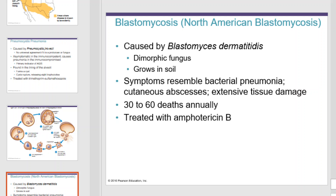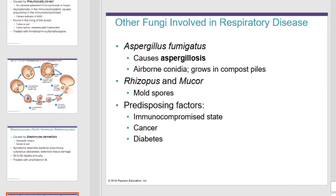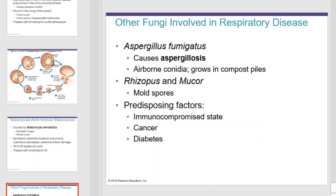Blastomycosis is caused by Blastomyces, a dimorphic fungus which grows in soil. Symptoms resemble bacterial pneumonia, with cutaneous abscesses and excessive tissue damage. This organism causes 30 to 60 deaths annually. Other fungi involved in respiratory disease include Aspergillus and Rhizopus. Aspergillus causes aspergillosis, contracted through inhalation of airborne conidia, and it grows in compost piles. Rhizopus is spread by mold spores. Those who contract these often have predisposing factors like immunocompromised states, cancer, or diabetes.